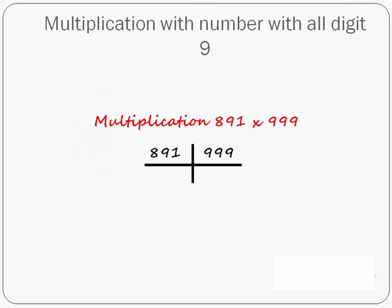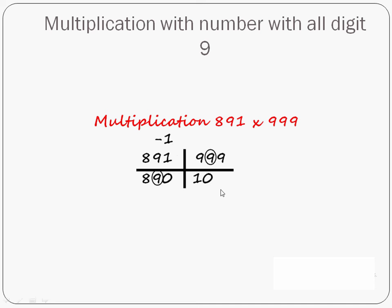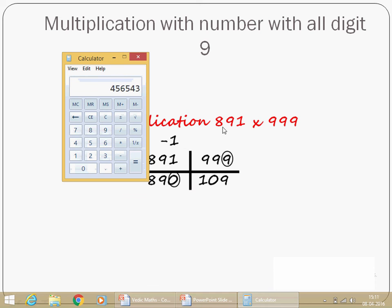Now multiply 891 × 999. First step: subtract 1, which gives 890. Second step: subtract each digit from 9 — 9 minus 8 is 1, 9 minus 9 is 0, 9 minus 0 is 9. Let us verify. You can see the answer is the same: 890, 109.